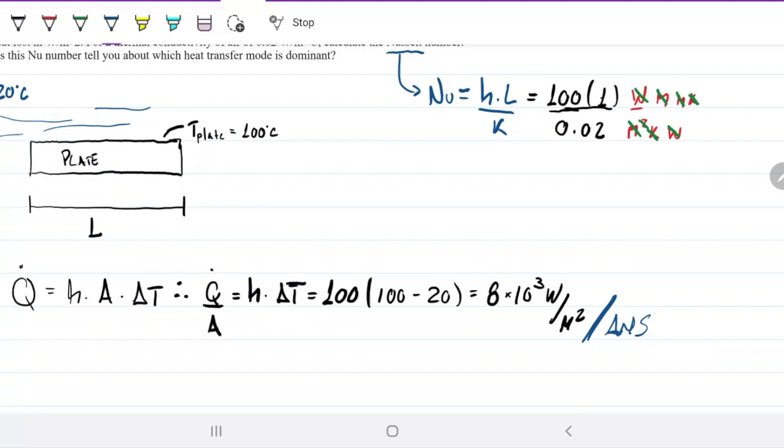So first thing I want you guys to take from this problem is the Nusselt number is dimensionless, okay? Or it's a non-dimensional number. And then, know that it's the same thing as multiplying by 5 and dividing by 100. So that will be 5,000, and there's no units to that.